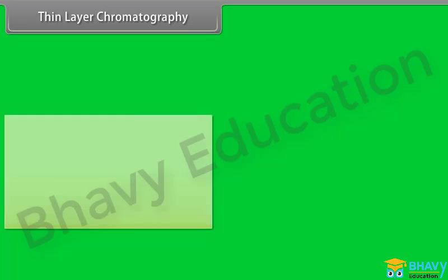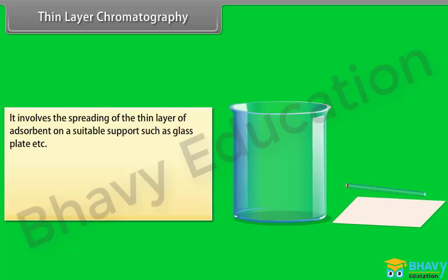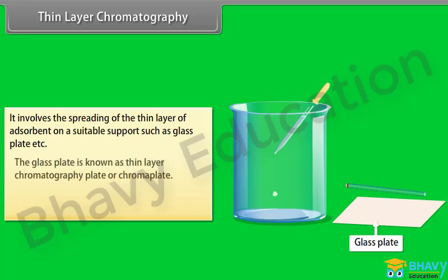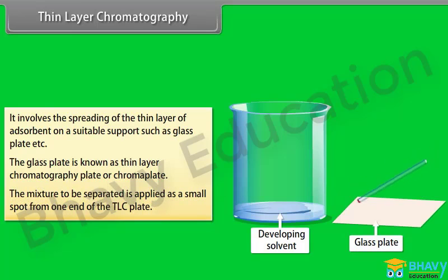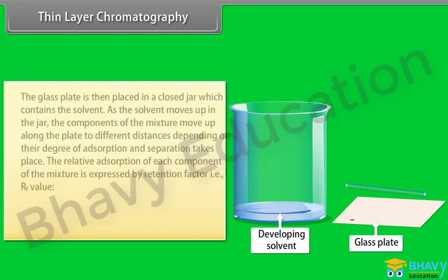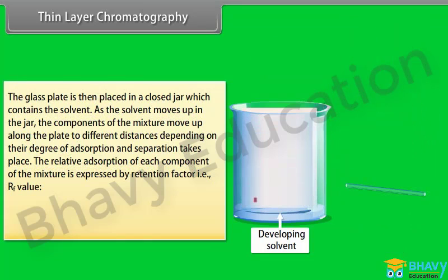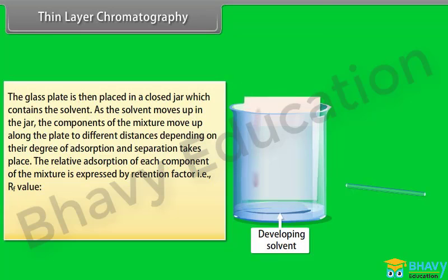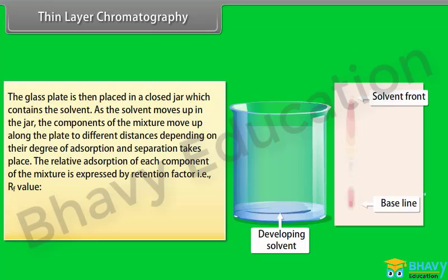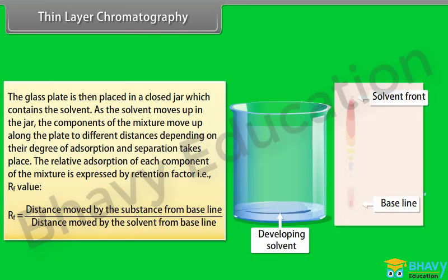Thin layer chromatography (TLC): It involves spreading a thin layer of adsorbent on a suitable support such as a glass plate, known as the TLC plate or chroma plate. The mixture to be separated is applied as a small spot from one end. The plate is then placed in a closed jar containing a solvent. As the solvent moves up, the components of the mixture move up along the plate to different distances depending on their degree of adsorption. The relative adsorption of each component is expressed by the retention factor, Rf, defined as: Rf = Distance moved by substance from baseline ÷ Distance moved by solvent from baseline.